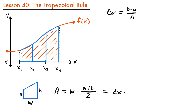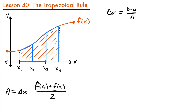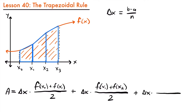Now we have our values of a and b, which we can plug into the formula: delta x times (f(x₀) plus f(x₁)) divided by 2. This is the area of the first trapezoid. Similarly, the second trapezoid contributes delta x times (f(x₁) plus f(x₂)) divided by 2, and the third contributes delta x times (f(x₂) plus f(x₃)) divided by 2. Adding these together gives the approximate area under the function using three trapezoids.